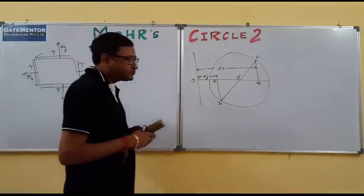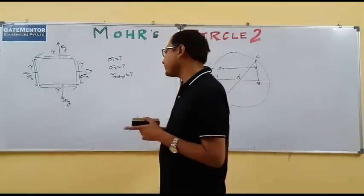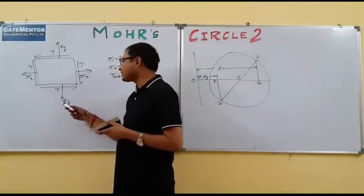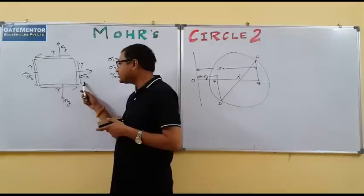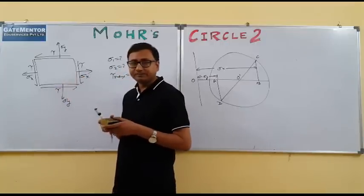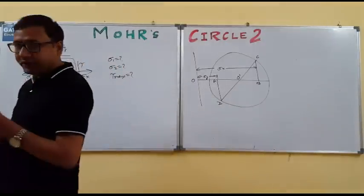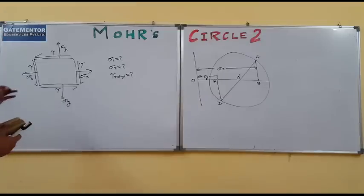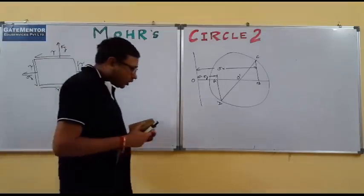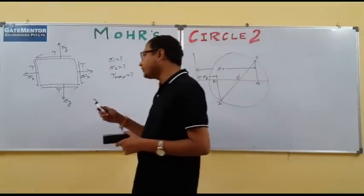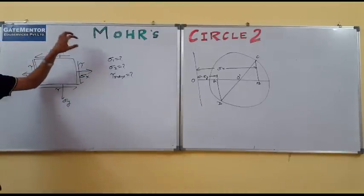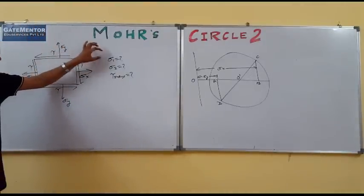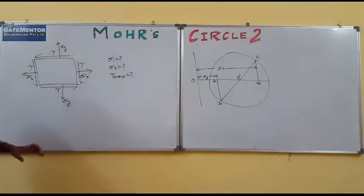Here is a body with normal stresses sigma x and sigma y, and with shear stress terms. Using the Mohr's circle for this body, we can calculate the maximum or minimum principal stresses, as well as the maximum shear stress.